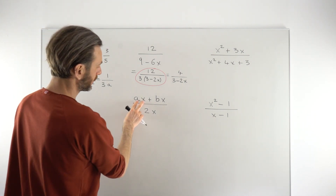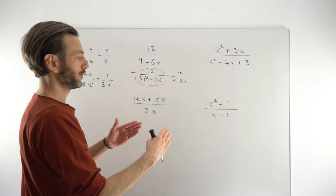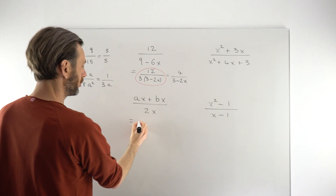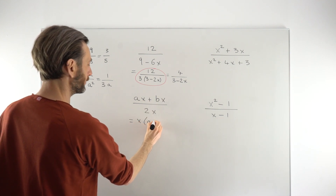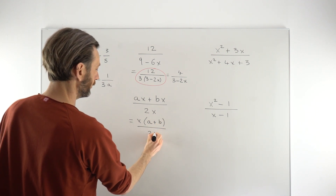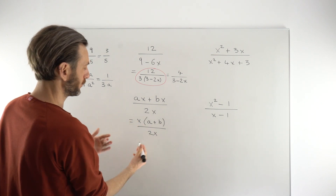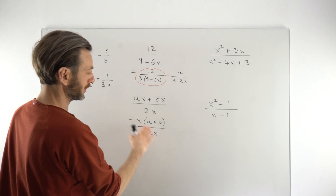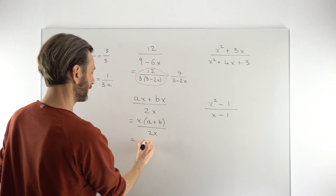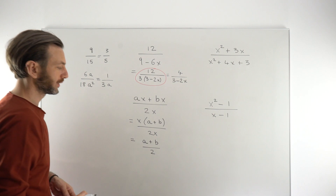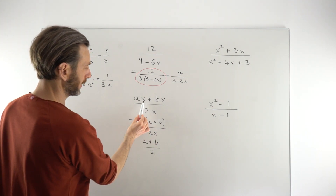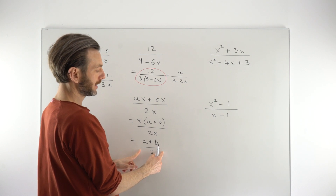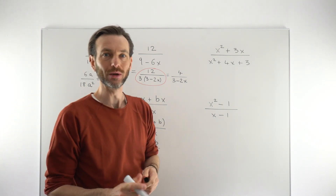So turning to the second one — looking at the three terms, there's a common factor of x. We could just divide through by x, but let's go through the more formal method again. Looking at the top line, there's a common factor of x, so we pull that out in front of a bracket. Then we can see there's a common factor of x between the top and bottom, so we divide top and bottom by x — or just cancel the x's — and we're left with (a plus b) over 2.